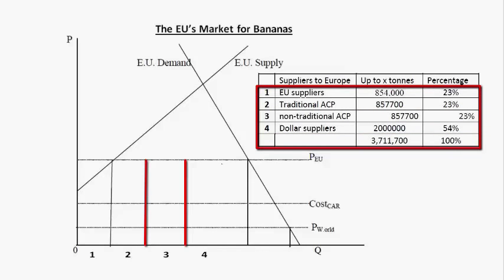1.7 over 3.7 is 46%, so approximately 45% of the bananas were going to come from traditional producers — whether European producers or ACP producers — and 55% was going to come from non-traditional producers, including non-traditional ACP producers and dollar countries.